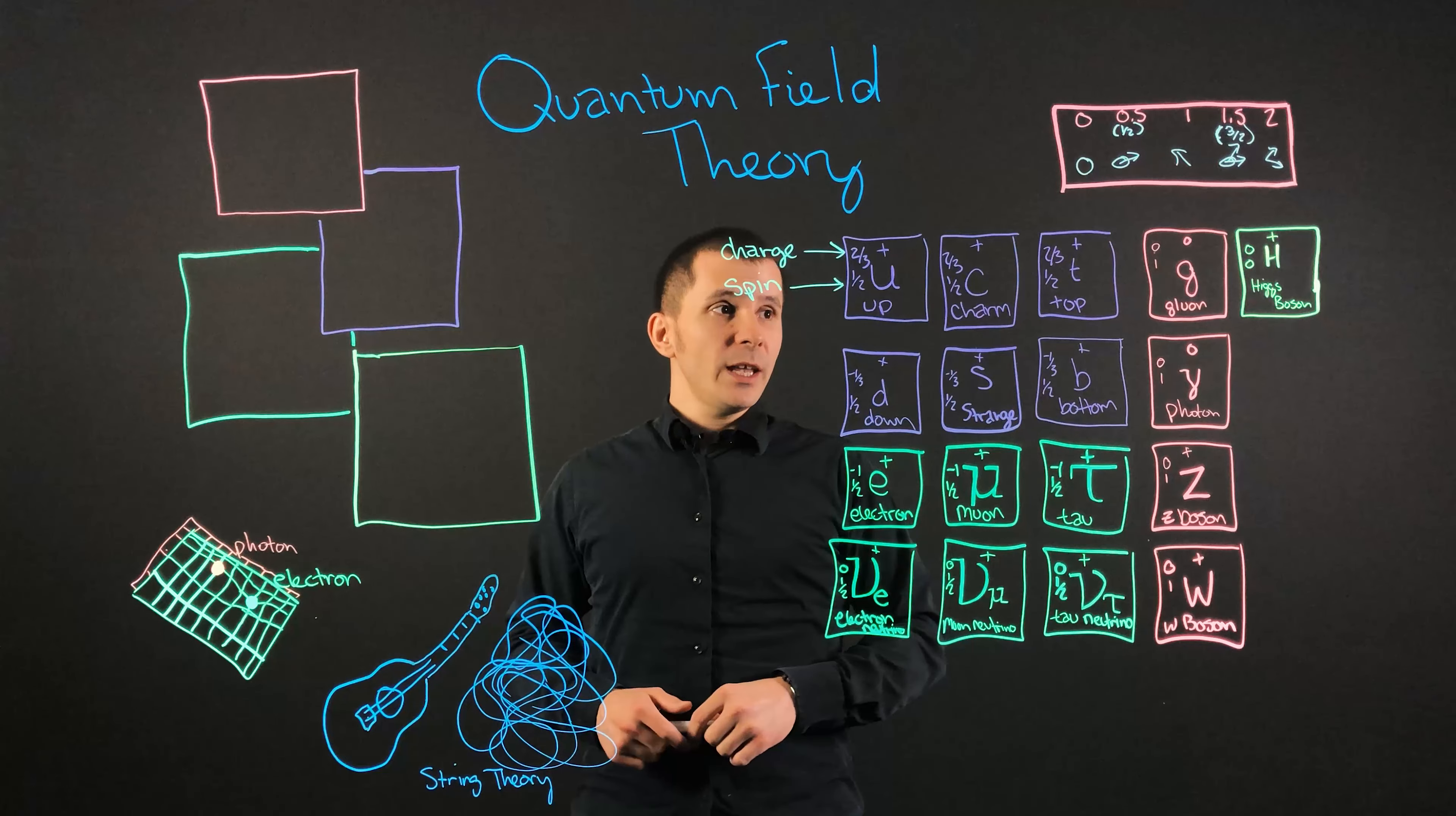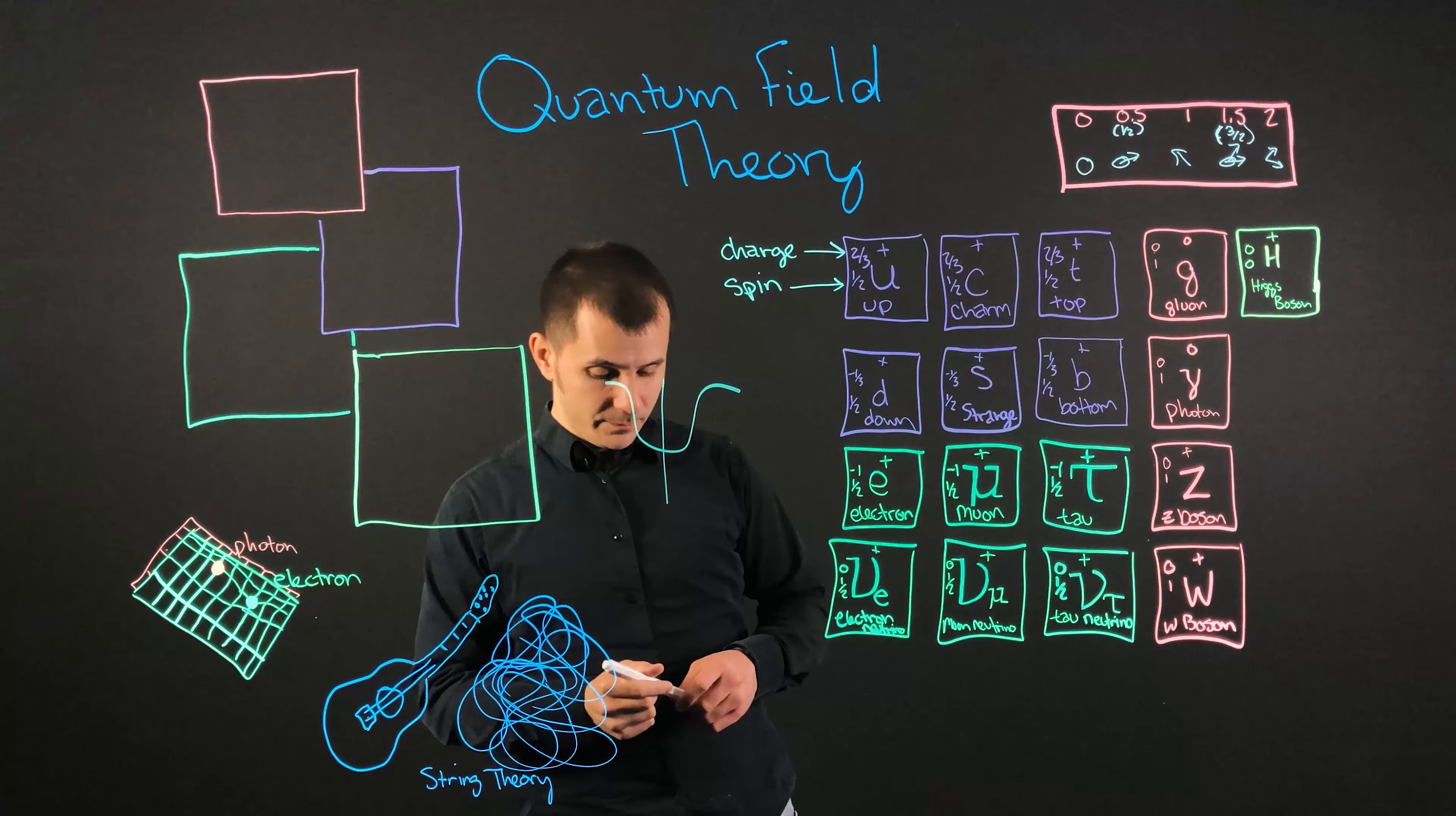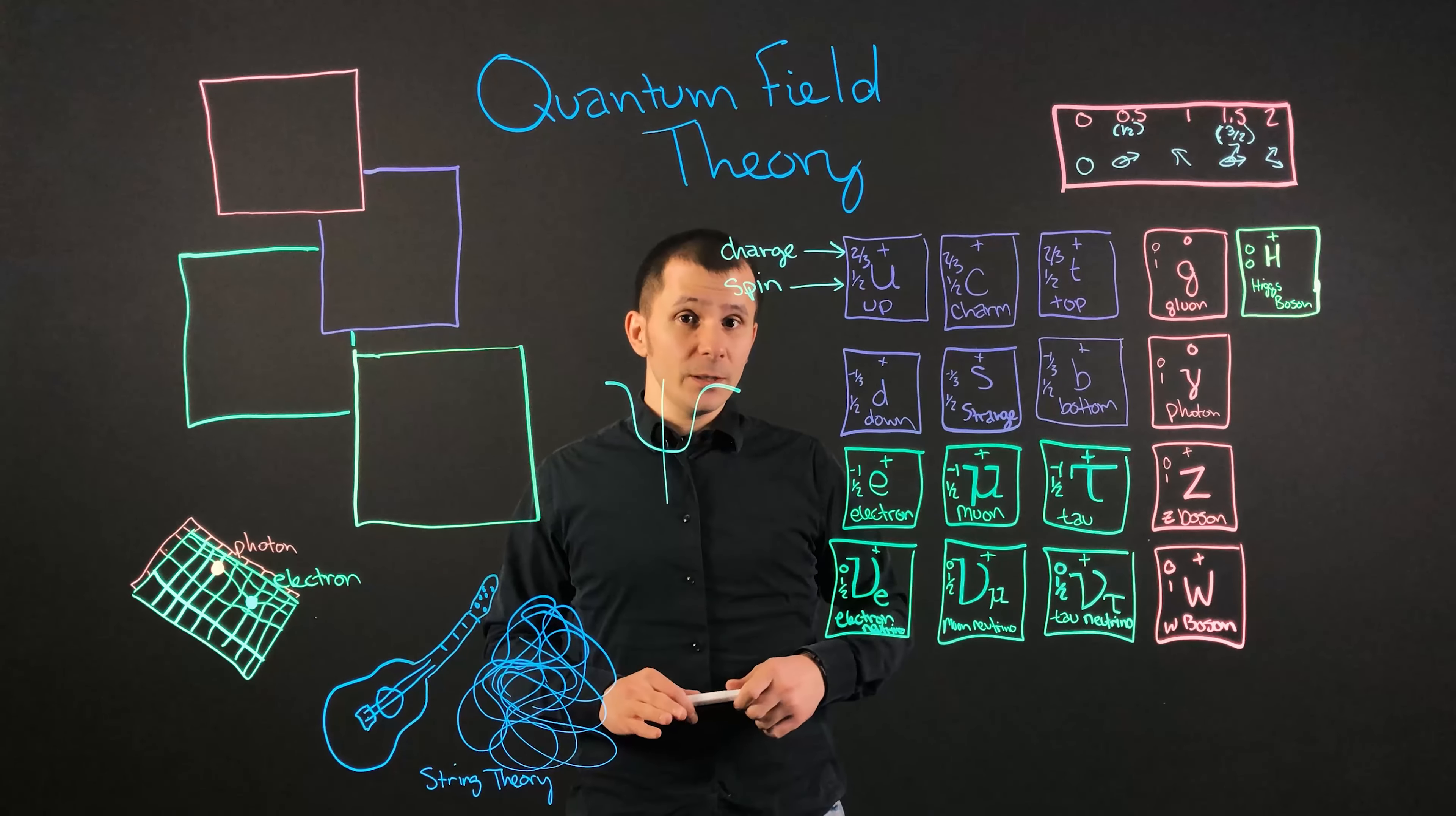Now here on the standard model we have a great number of different particles which again are all waves. Don't forget they're all waves only until they are observed do they become a particle. So for example the Higgs boson that was discovered has a spin of zero and this was the holy grail for the standard model.